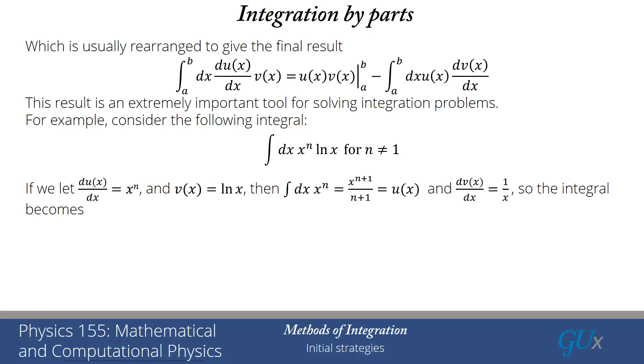So now if I substitute into the product rule on the top for the u and the v using these explicit forms, what we find is the integral dx x^n log x is equal to x^(n+1) divided by n+1 times log x. That's the uv term minus the integral dx of x^n divided by n+1. It was x^(n+1), but then it was divided by a power of x from the dv(x)/dx. So it becomes just x^n.